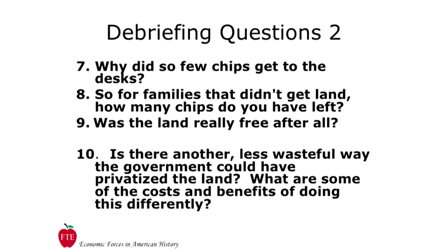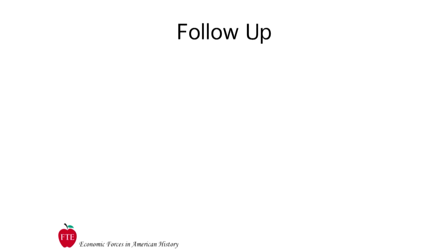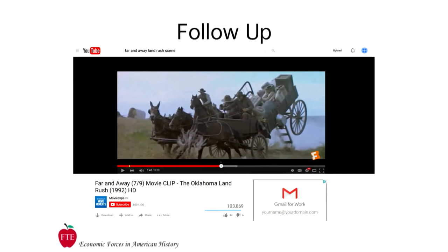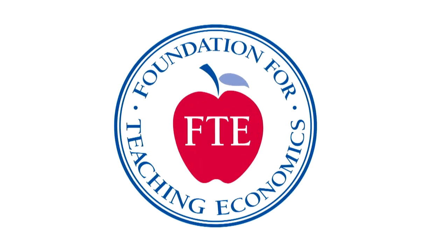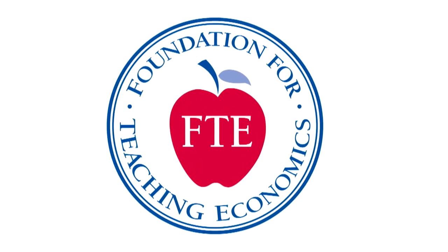While every allocation mechanism has costs and benefits, this example from history begs the question: is there a better way for governments to allocate scarce resources such as land? A great follow-up to this activity is to show the land rush sequence from the 1992 film Far and Away, starring Tom Cruise and Nicole Kidman. The sequence comes near the end of the film and lasts 5 to 10 minutes. Director Ron Howard went to great lengths to include several historical details in this sequence.